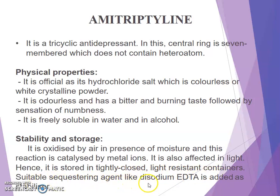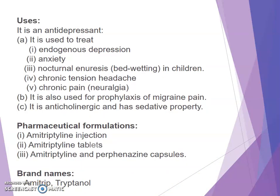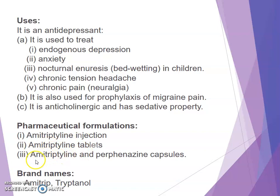A suitable sequestering agent like disodium EDTA is added as a stabilizer. Uses: amitriptyline is an antidepressant used to treat endogenous depression, anxiety, nocturnal enuresis, bed-wetting in children, chronic tension headache, chronic pain, and neuralgia. It is also used for prophylaxis of migraine pain. It is anticholinergic and has sedative property.